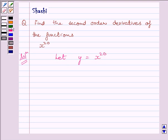Now, differentiating both sides with respect to x, we get dy upon dx is equal to 20 multiplied by x raised to the power 19.